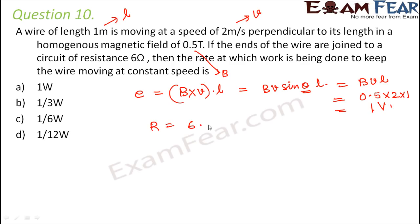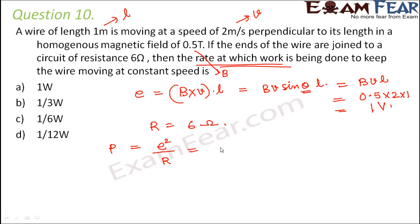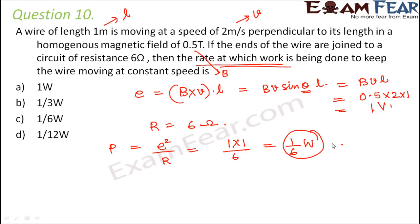Resistance is given as 6 ohms. The rate at which work is done is nothing but power. Power equals EMF squared divided by R, which is 1 squared divided by 6, giving 1/6 watt. So option C is correct.